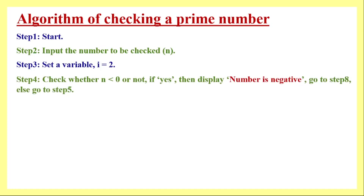We set i = 2. Then we begin validations. First, since prime numbers cannot be negative, we check whether n is less than 0. If yes, we display a message: 'Number is negative,' and go to the Stop step. If no — meaning the number is zero or positive — we proceed to the next step.